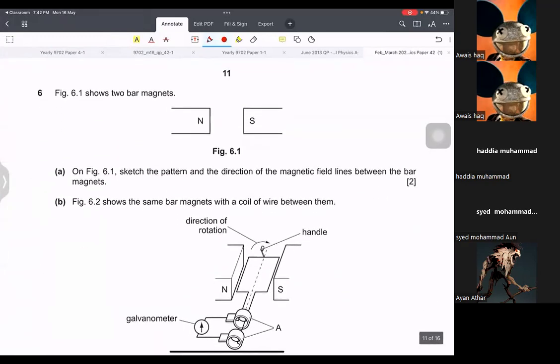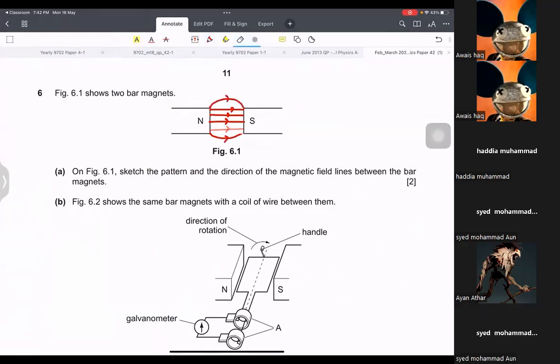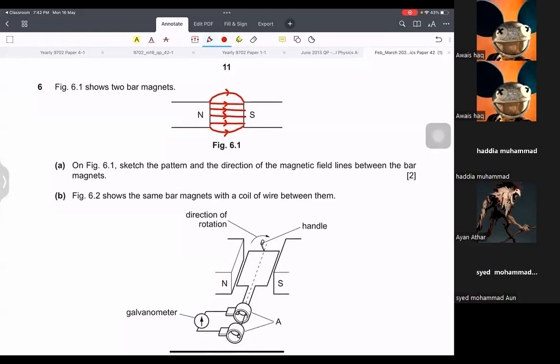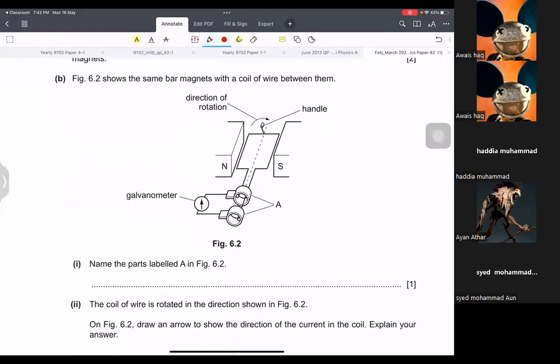Sketch the pattern of directional magnetic field. So you have to make at least four lines, equally spaced and straight. At the ends, they can curve a little. Take your time with it. Don't rush. Just make equally spaced lines. Always north to south.